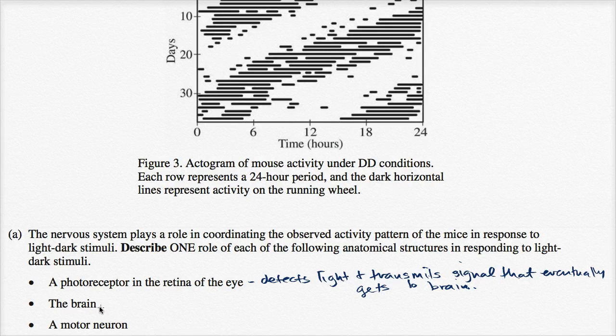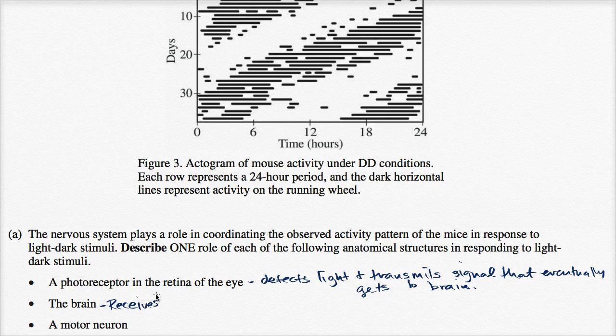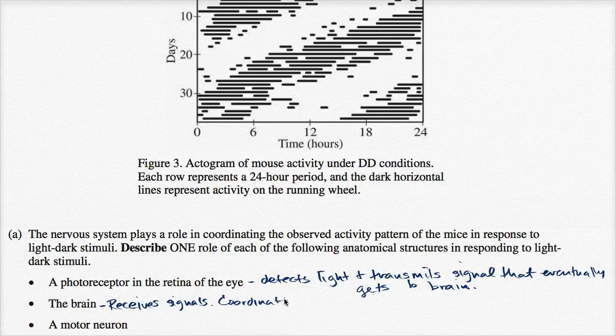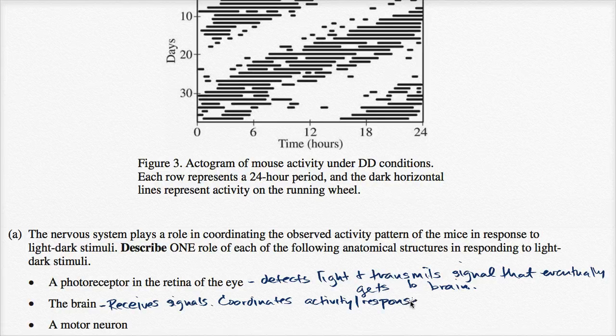All right, the brain. Well, it receives signals. I before E except after C. It receives signals and then coordinates activity based on that. Coordinates activity response based on signals, based on the signals.